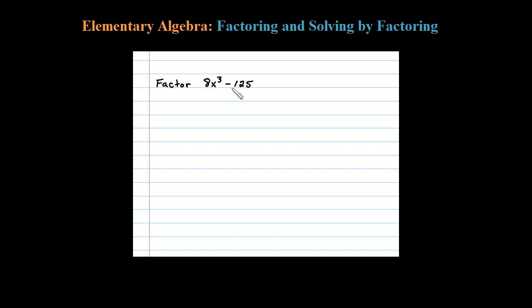Here we're asked to factor this binomial and I notice it's a difference of two perfect cubes. Difference of cubes a³ - b³ factors as (a - b)(a² + ab + b²).